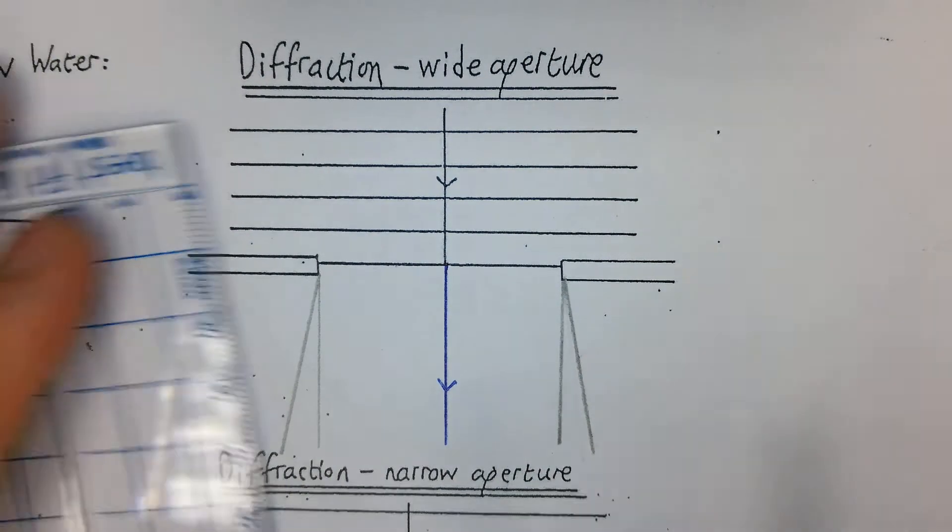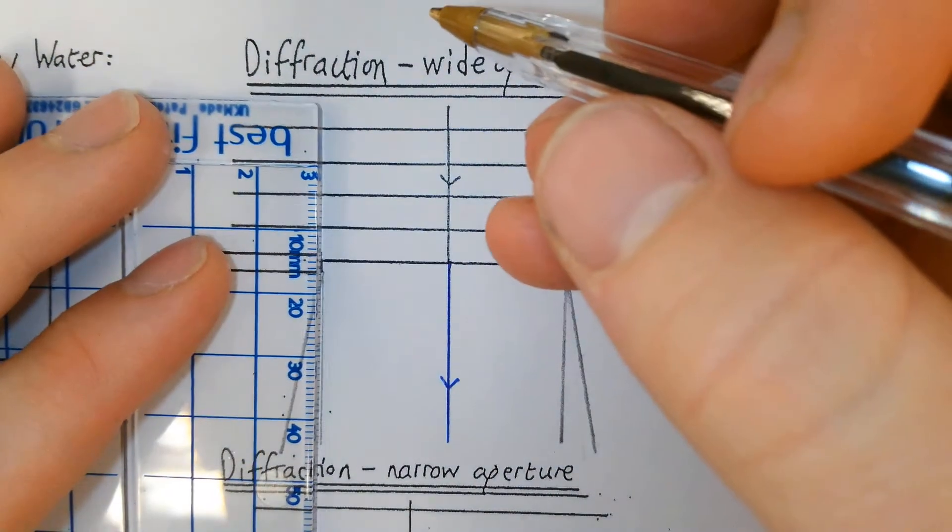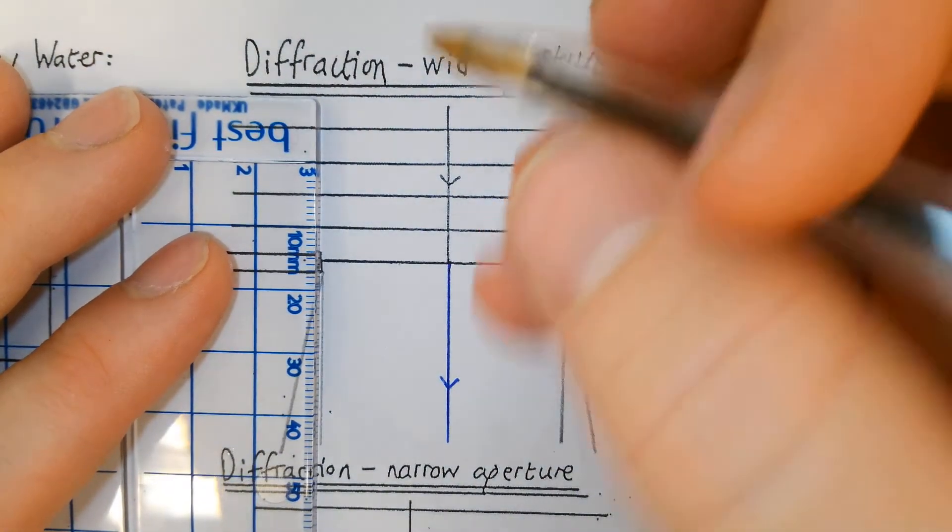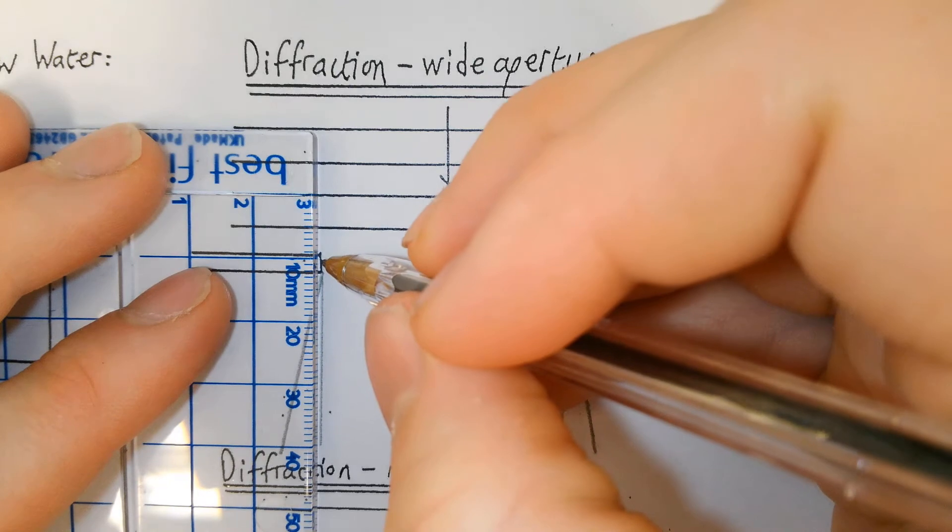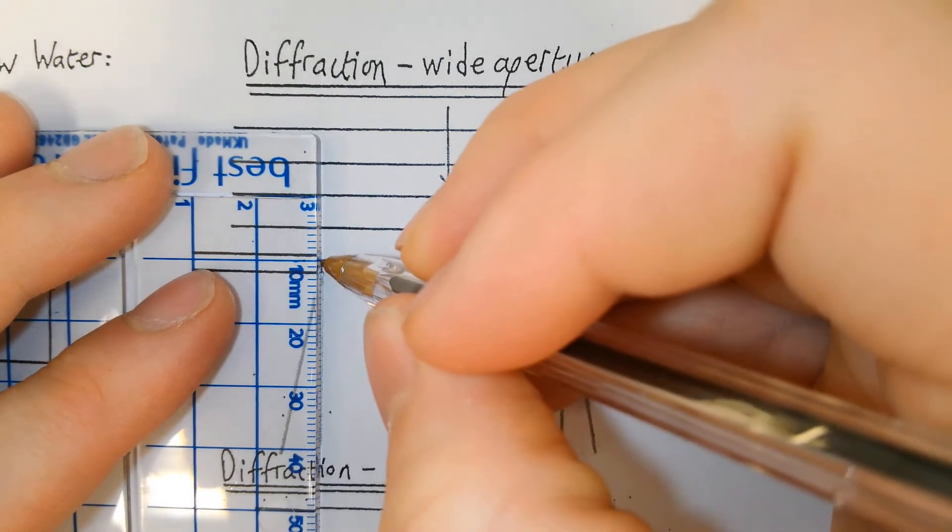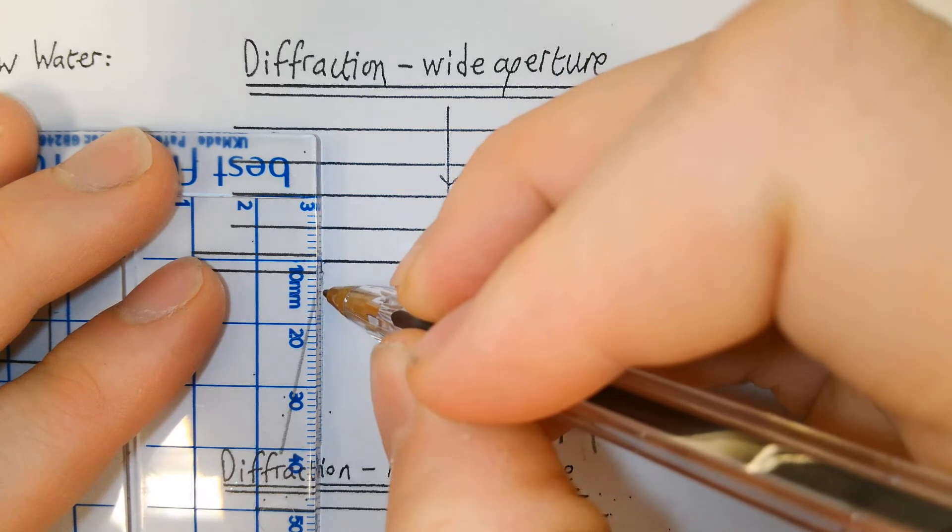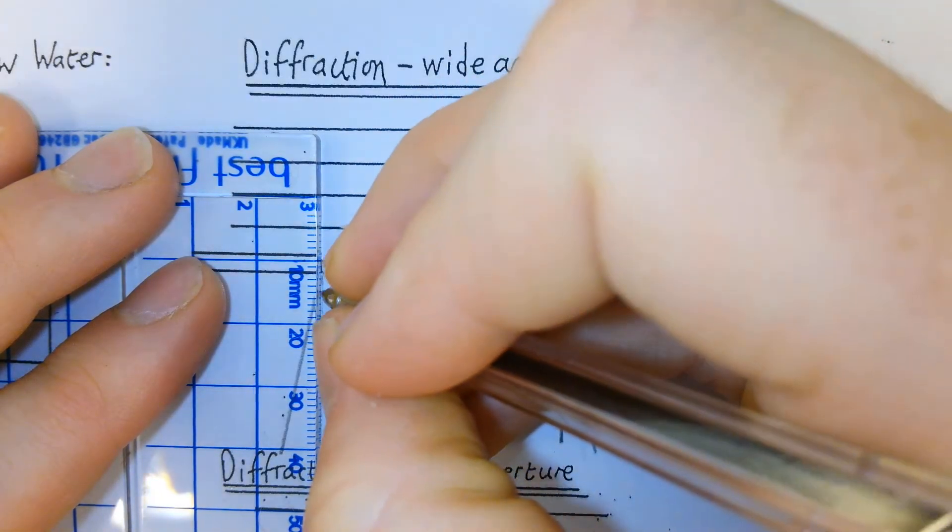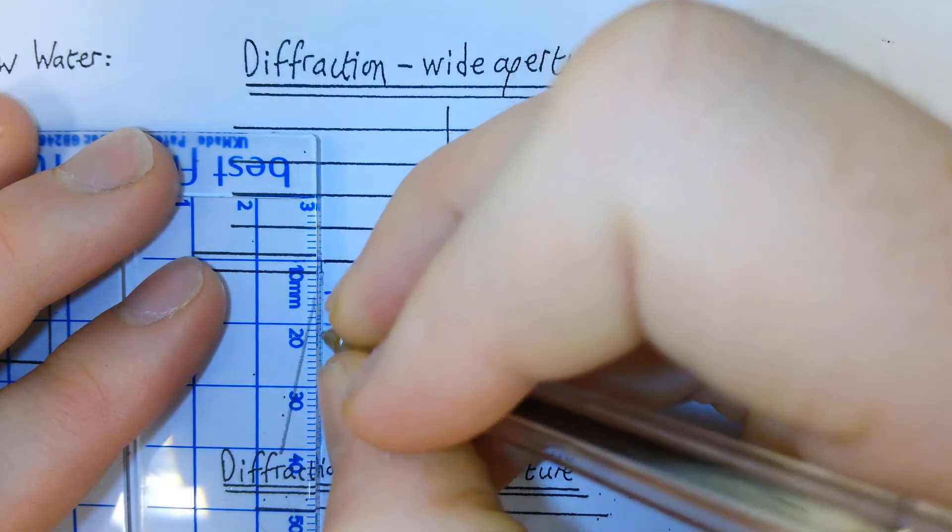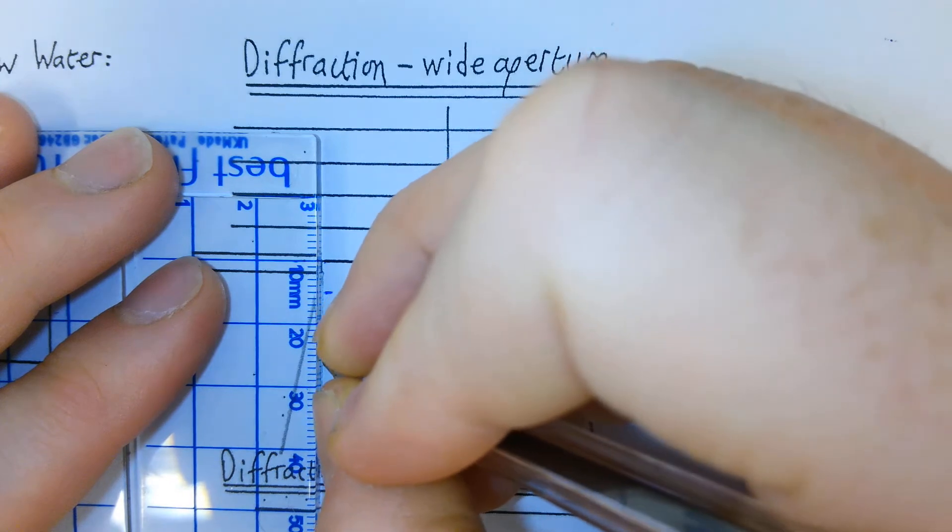I'm going to measure, just check this should be five. One, two, three, four, five. Yeah, so five millimeter spacing between each of the waves. I'm going to go one, two, three, four, five and mark that.